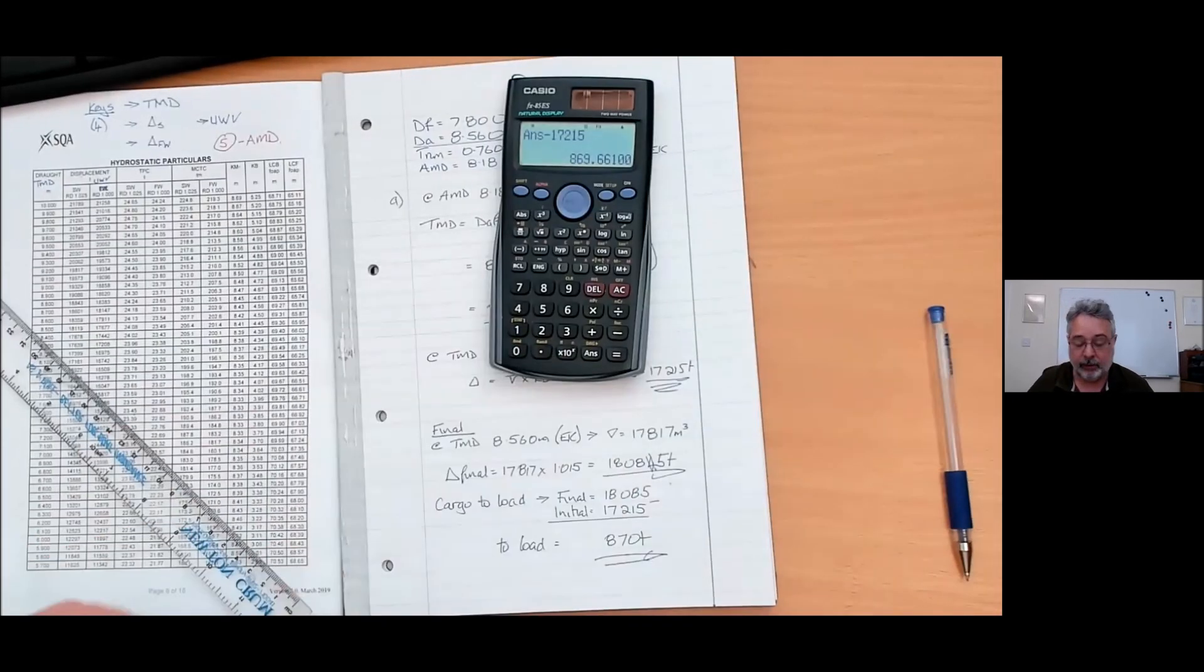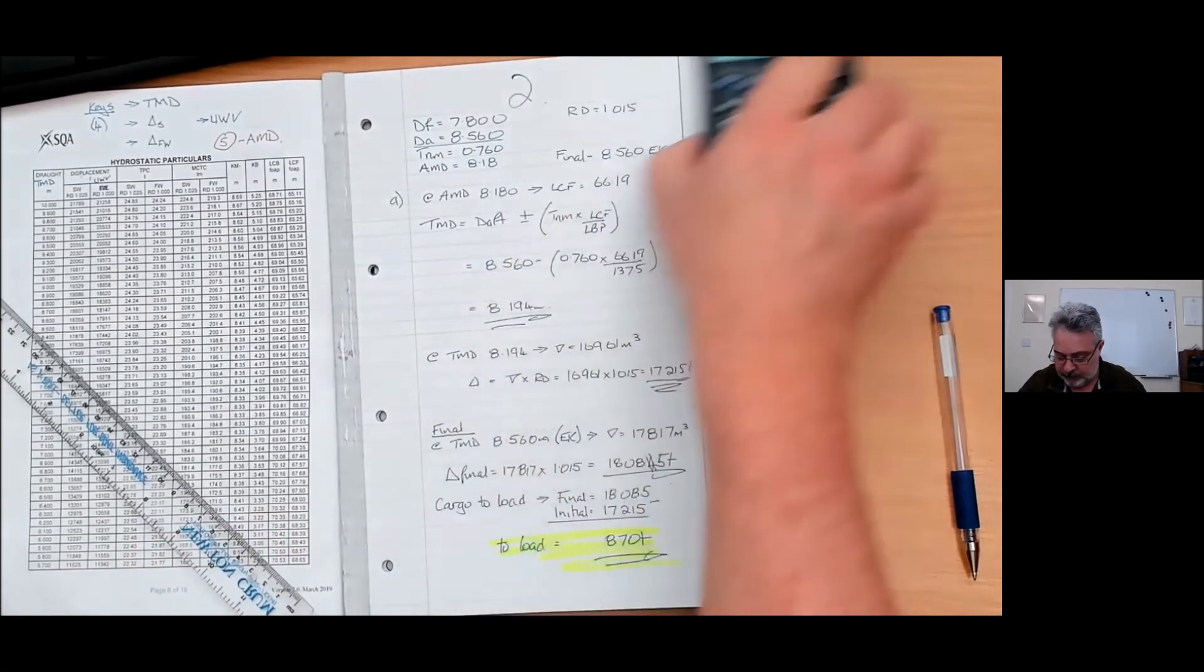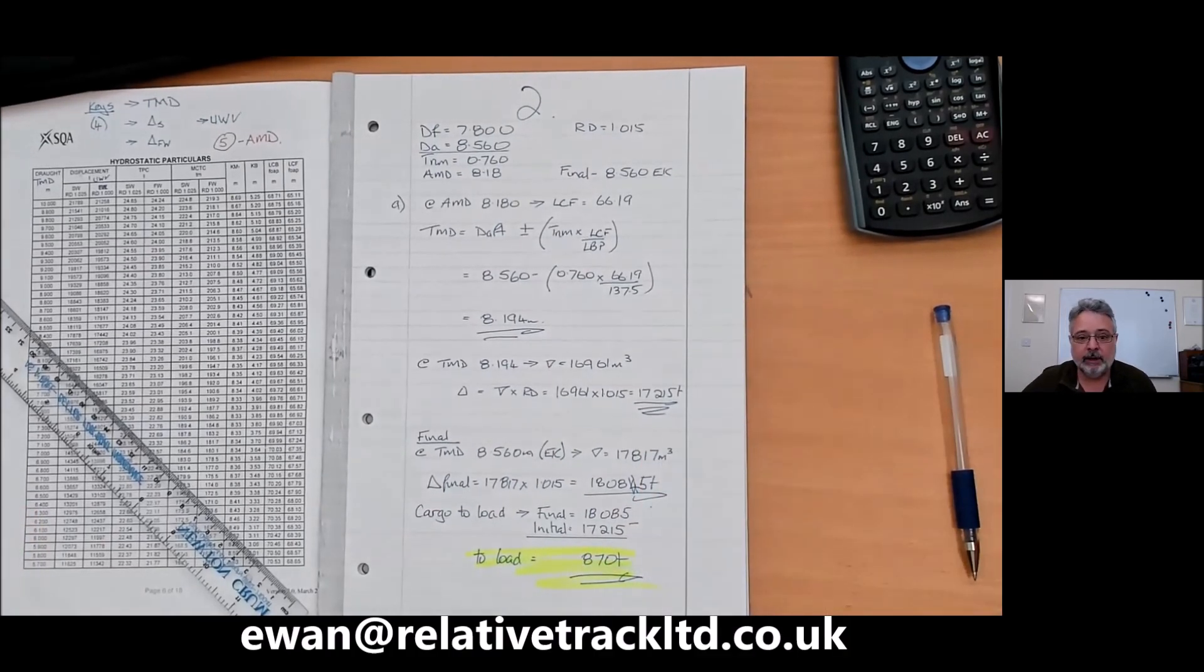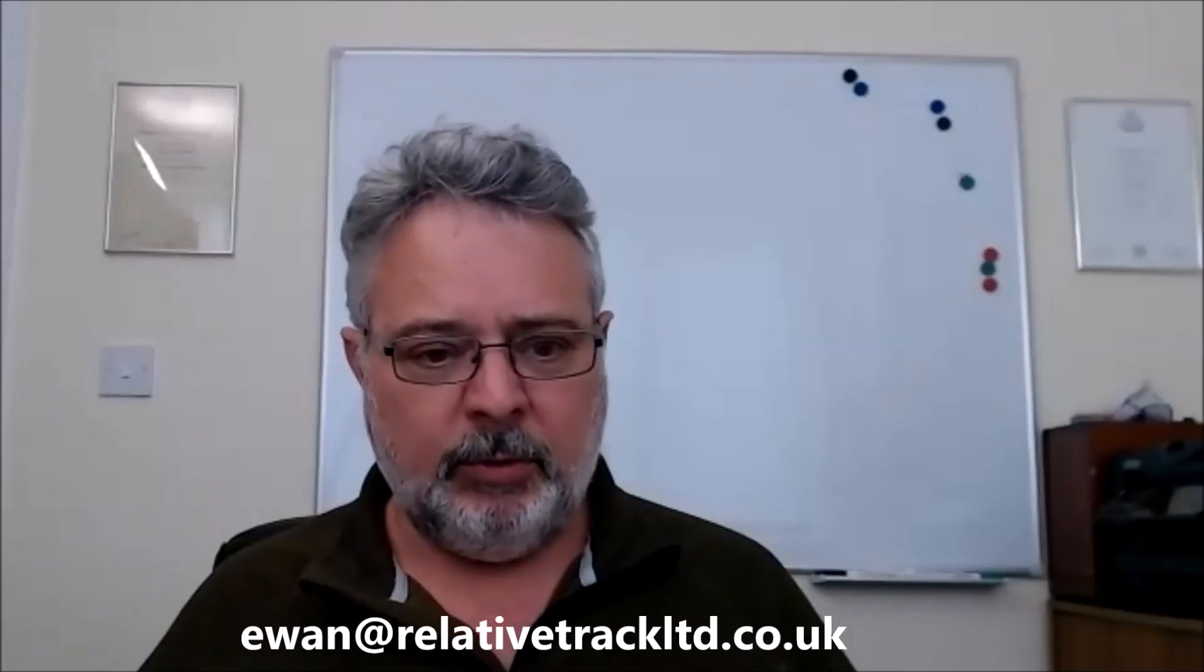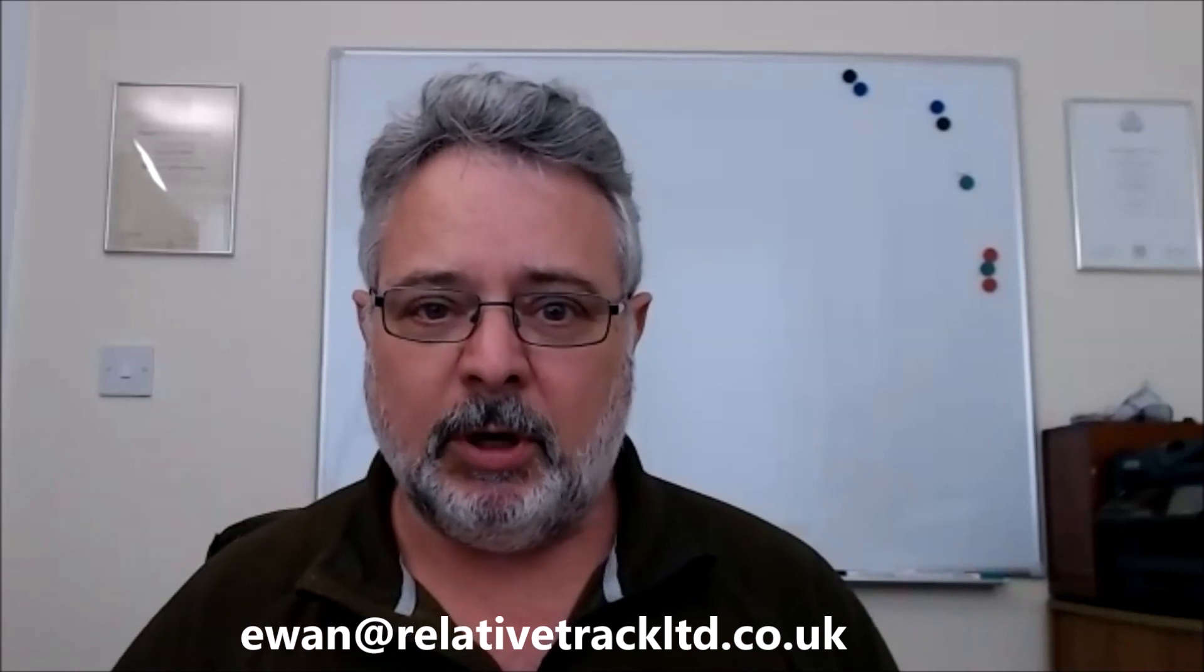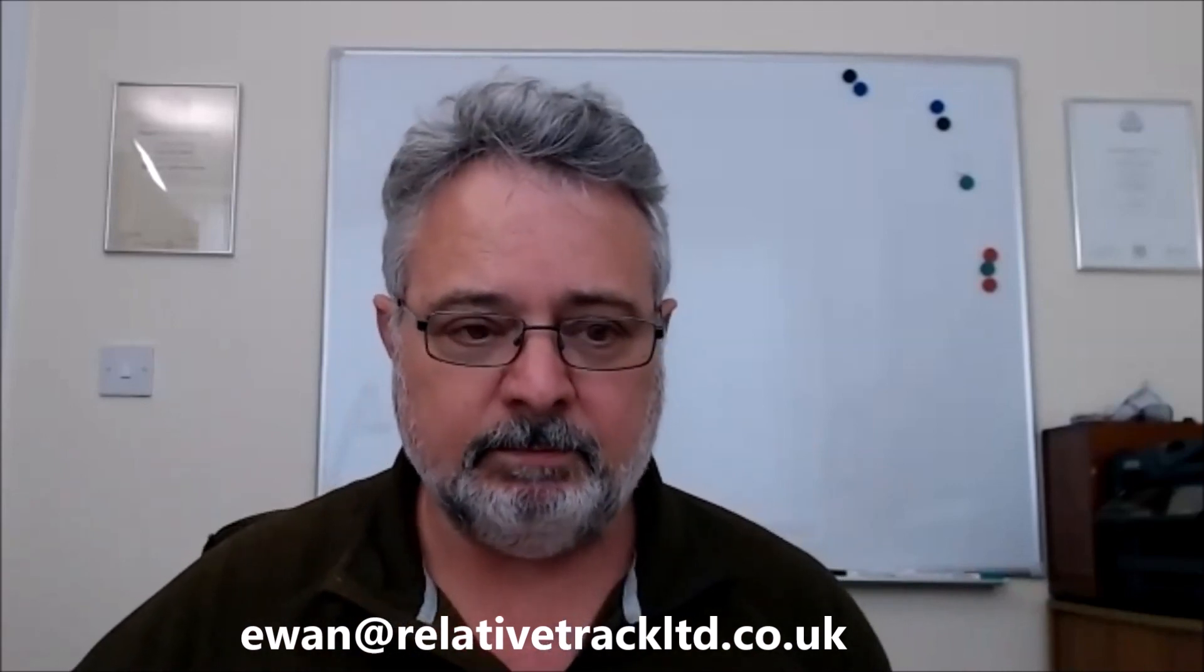Cargo to load, that's going to be final 18,085 minus initial 17,215, and that will give us to load. That's on screen minus 17.215 equals 870 tons. And to make it easier for the marker, highlight it. Happy days. Didn't take long, nice and easy, one page, 50 marks in the bank, and then on to part B.